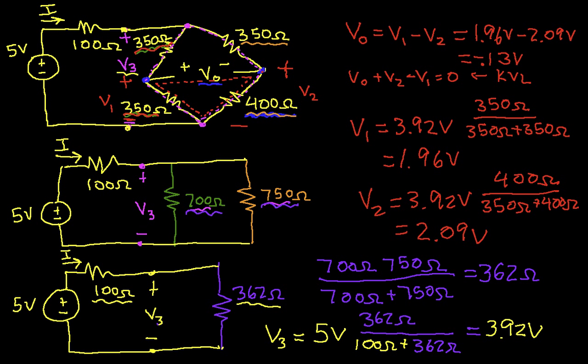Well, do we have enough information to find I? It turns out that indeed we do, because we know in the bottom circuit that we have just 100 ohms in series with 362 ohms. We've got 5 volts across that combination.